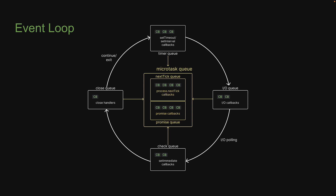For our first set of experiments, we are going to deal with only the two microtask queues. Before we run our experiment, I want to explain how we can queue up a callback function in each of these queues.